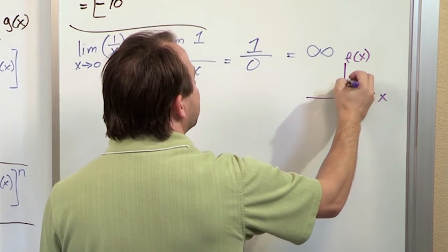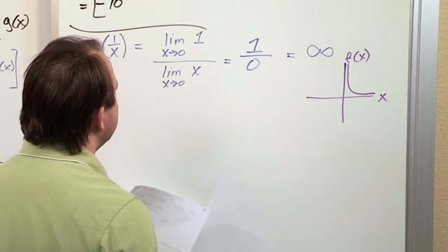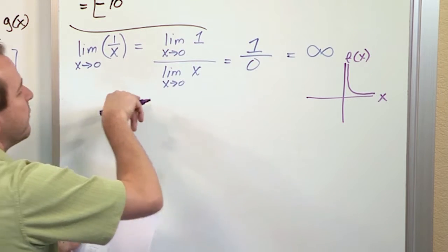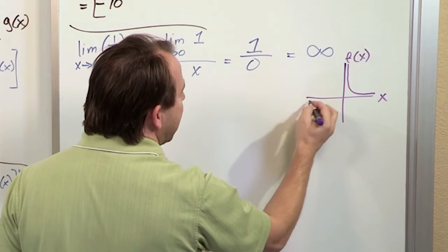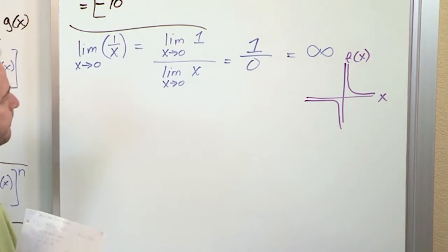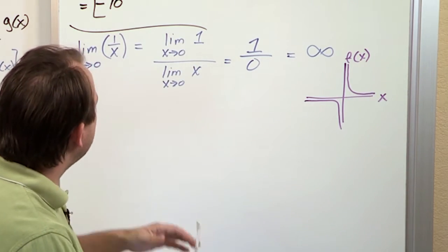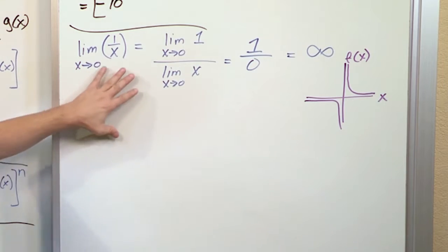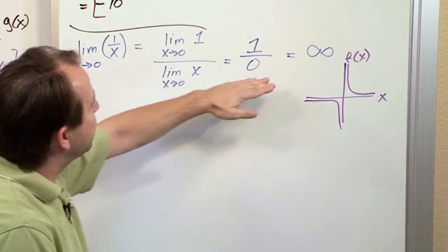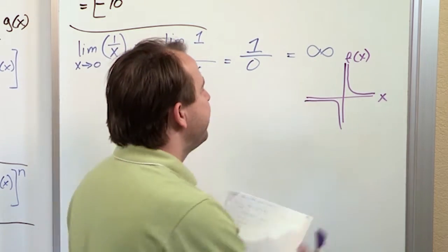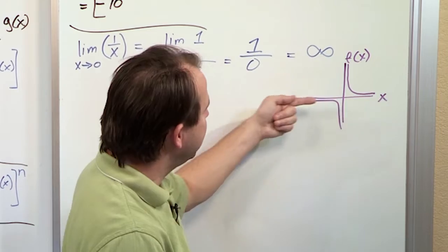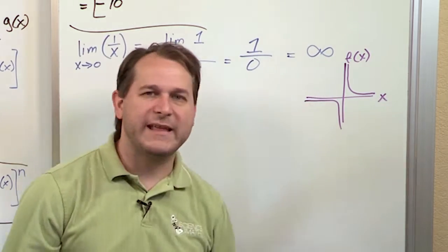So if I come from the right, I go to positive infinity. But if I approach from the other way, I'm going to be approaching 0 from smaller and smaller negative values — these are negative values — so it's actually going to be going to negative infinity. I'm kind of playing fast and loose with this just because I'm trying to teach you the limit laws. Really, it approaches positive infinity from the right and negative infinity from the left. Just keep that in your back pocket.